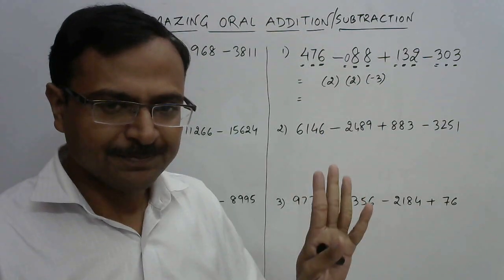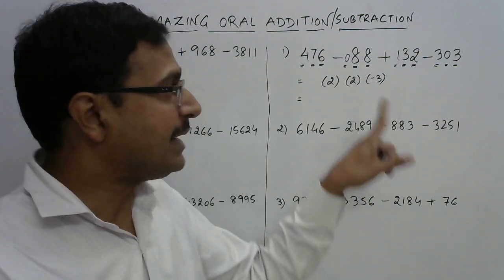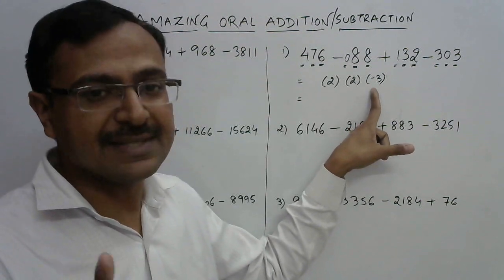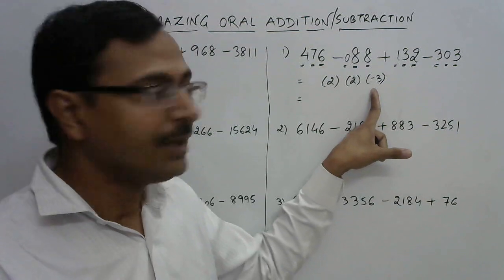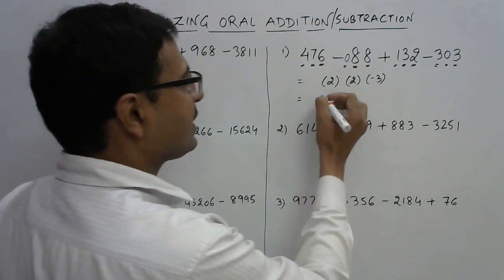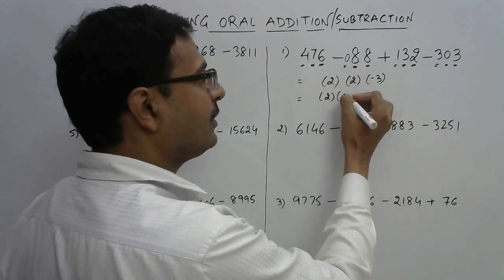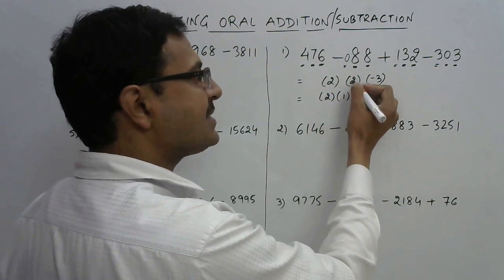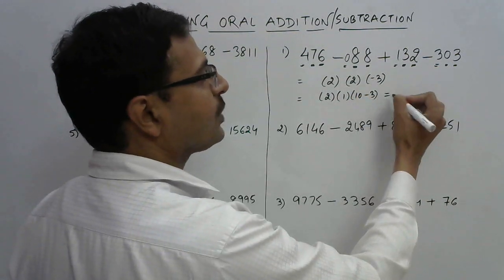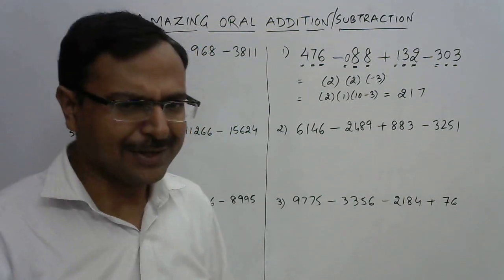This is a negative number less than 10, so what I need to do is borrow one from the previous digit. This becomes 2, I give 1 from here to here, as a result this becomes 10 minus 3, and here is your answer: 2, 1, 7. Very easy, right? The borrowing part is a little bit tricky, but I'm sure solving these six questions you'll be through with the method.